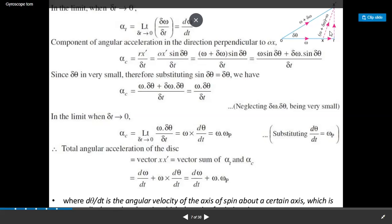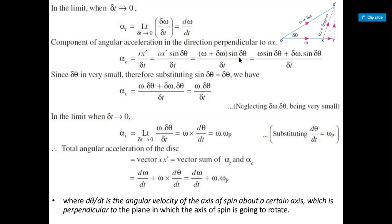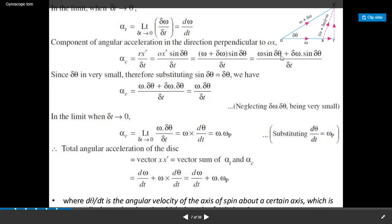As discussed, RX-dash is the radial component of the acceleration. RX-dash equals OX-dash × sin(delta theta), which is (omega + delta omega) × sin(delta theta). So alpha_c becomes (omega × delta theta + delta omega × sin(delta theta)) / delta t. Since delta theta is very small, substituting sin(delta theta) = delta theta, we get alpha_c = (omega × delta theta + delta omega × delta theta) / delta t.